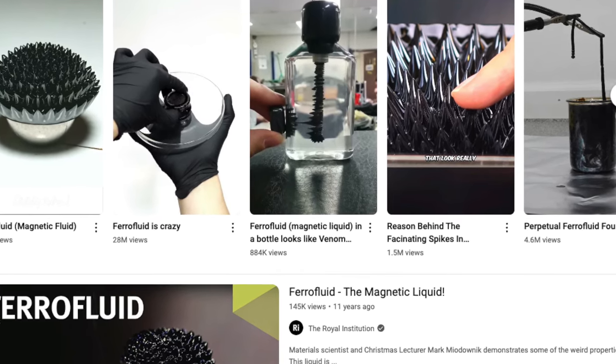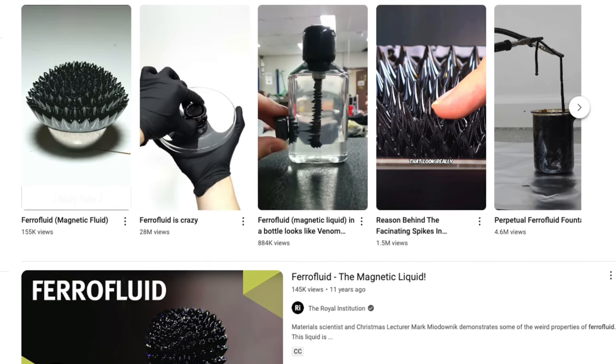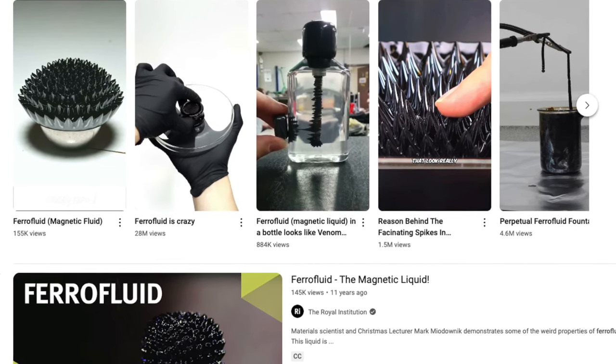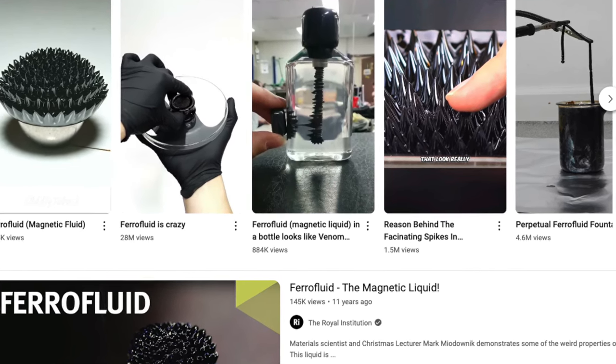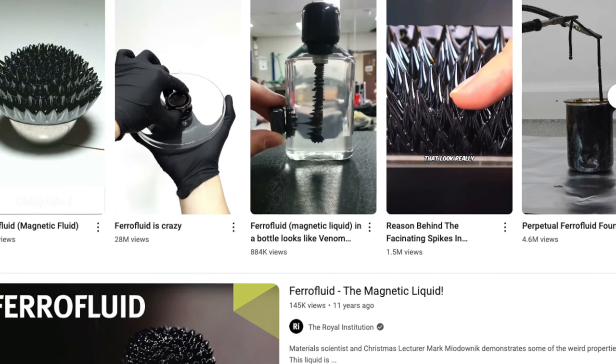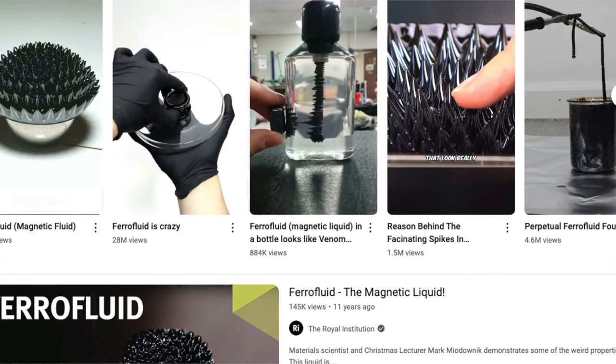A blob of ferrofluid, called a bolus, tends to stay together when in a magnetic field because it is attracted to itself. If you place a ferrofluid bolus in a magnetic field, it will form a liquid mass that seeks to equalize the magnetic field everywhere on the surface.